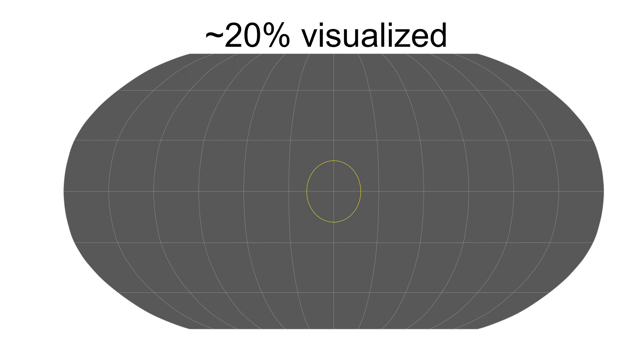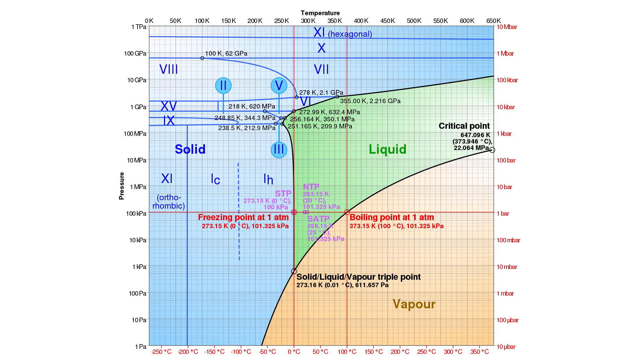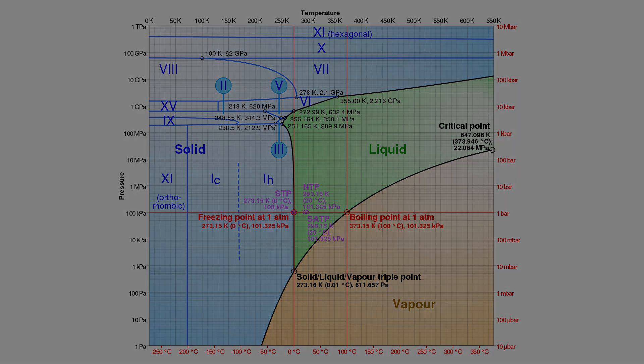Mazu's extreme ocean depth will also affect the environment on the seafloor. The pressure at the bottom of the ocean will be so intense that in some areas, water may become solid. This would result in ice flats covering the deepest parts of the alien seabed.